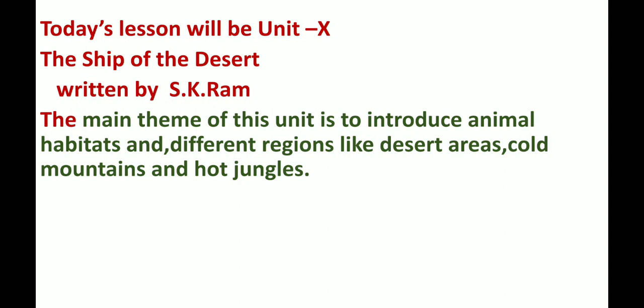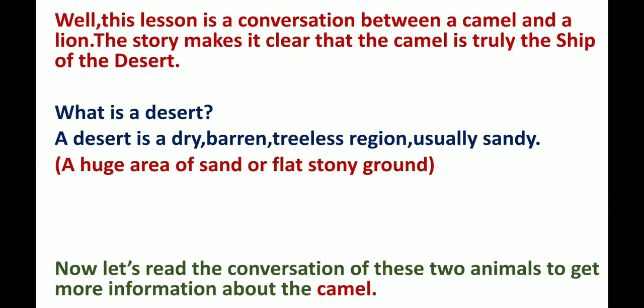This lesson is a conversation between a camel and a lion. The story makes it clear that the camel is truly the ship of the desert. So what is a desert? A desert is a dry, barren, treeless region, usually sandy — a huge area of sand or flat stony ground.